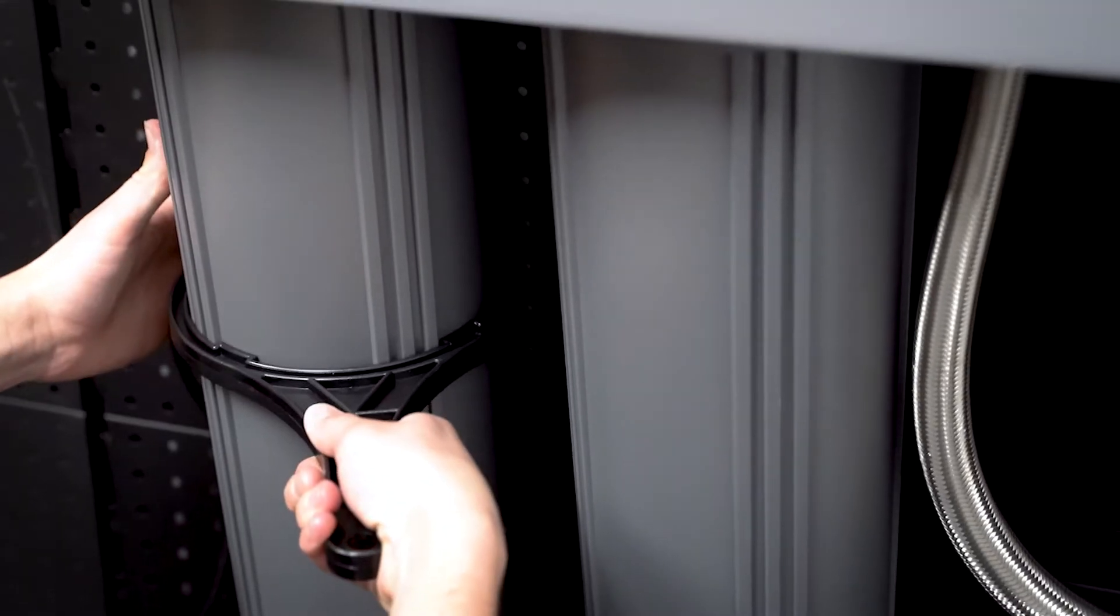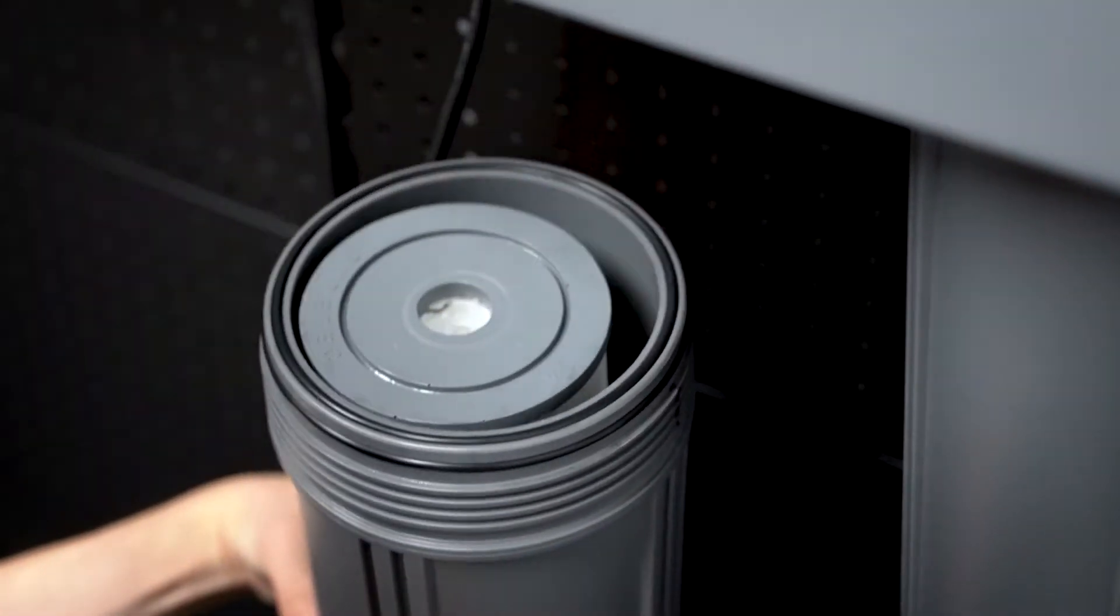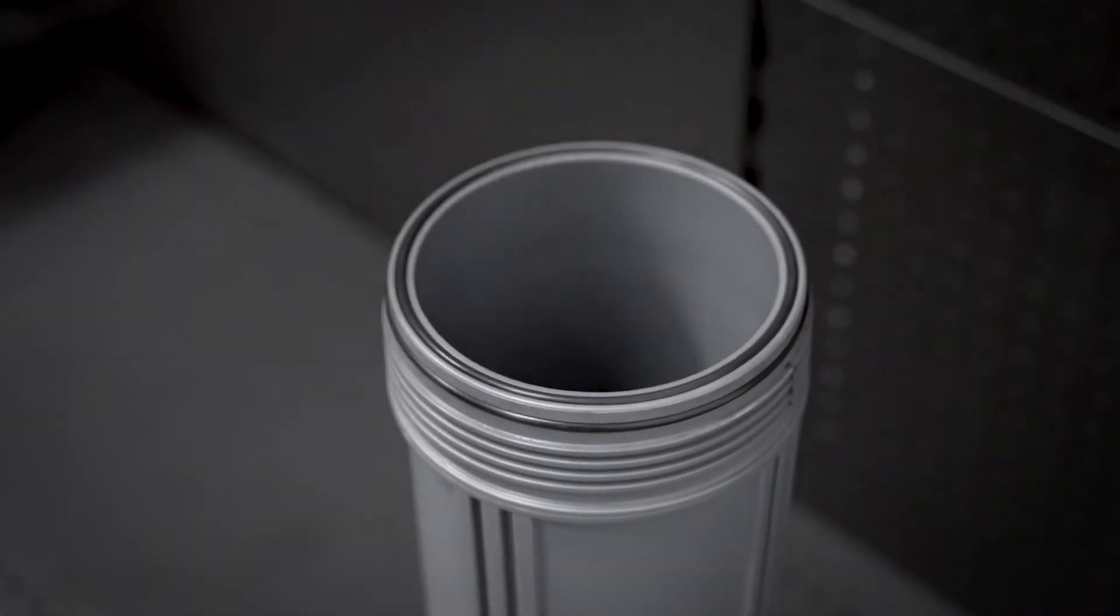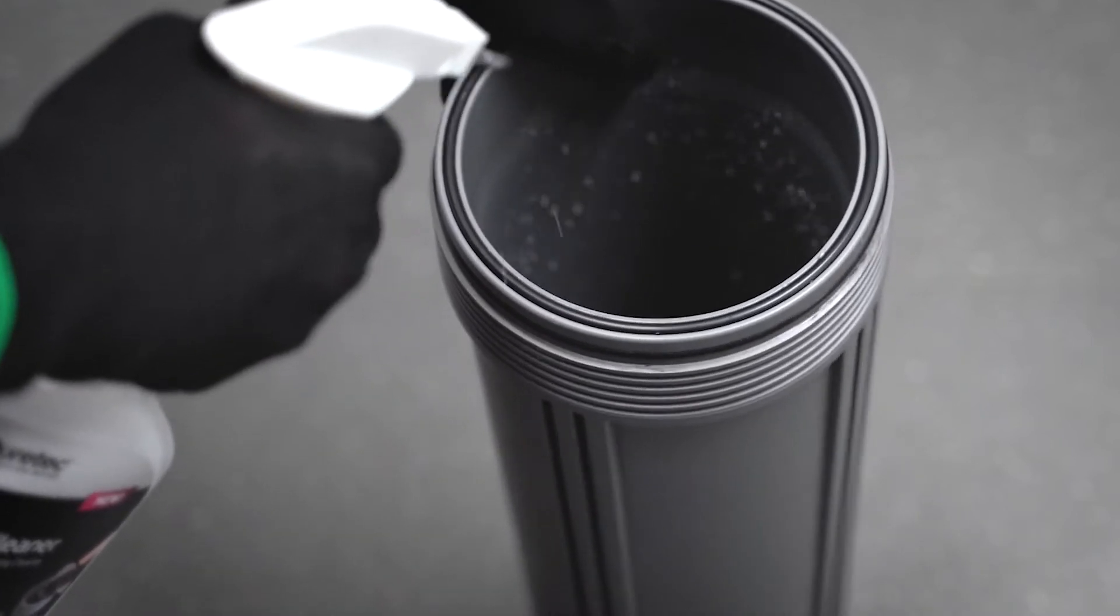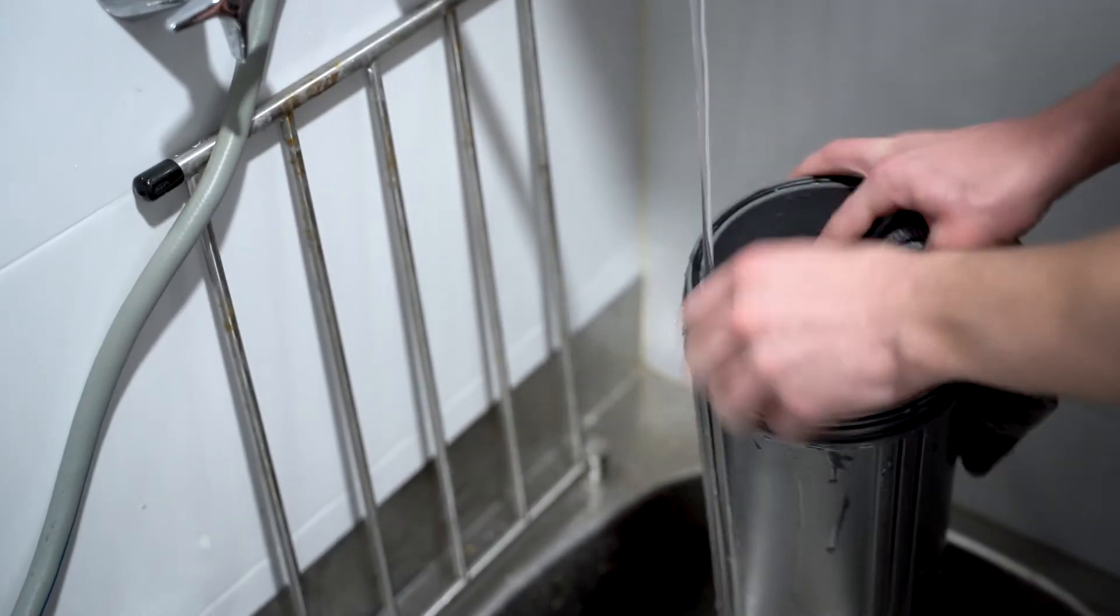The second step is to change the filter cartridges. Do this by unscrewing the filter housings, turning from right to left using the spanner as shown. Remove and dispose of the old cartridges, then clean the bowls with PureTech housing sanitizer or detergent and warm water and rinse thoroughly.